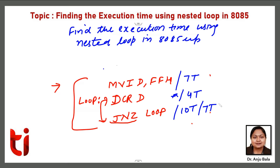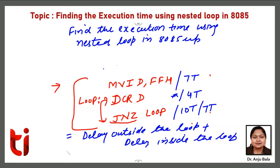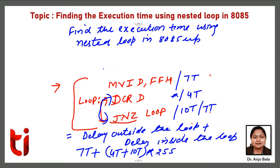For calculating single for loop delay, we have already discussed total delay inside the loop and delay outside the loop. Total T-states outside the loop is 7 T-states. For inside the loop: 4 T-states plus 10 T-states, executed 255 times. At the one time when it exits from the loop, 7 T-states are required, so we reduce 3 T-states. This gives approximately 3574 T-states required for this single loop.